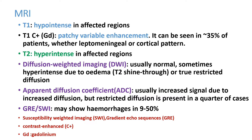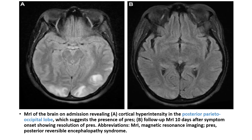On MRI in the acute condition, the patient develops posterior parietal occipital lobe hyperintensity. If you repeat the MRI after some time, you can see it is completely reversed. This is the MRI finding of a PRES patient — the patient completely recovers and the MRI taken after 10 days is completely normal.